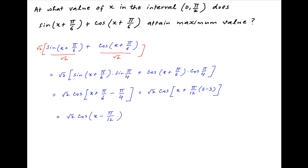Now cos of a number is maximum when that number is equal to 0. In this case the maximum value of the given expression will therefore be reached when x minus pi upon 12 is equal to 0.